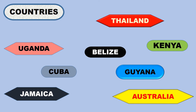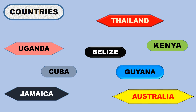Some countries in the tropical zone are Thailand, Uganda, Belize, Kenya, Cuba, Guyana, Jamaica, and Australia.